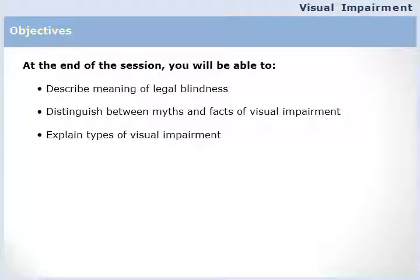At the end of this session you will be able to describe the meaning of legal blindness, distinguish between myths and facts of visual impairment, and explain types of visual impairment. Hi, I'm Professor Sujata Khan and I'm going to talk about visual impairment — a brief overview of what is visual impairment, the different types, and how to identify a child who may be at risk for visual impairment in a classroom.